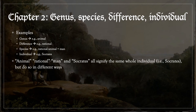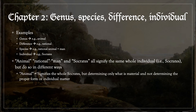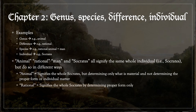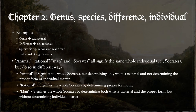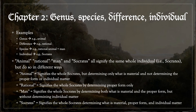Animal, rational, man, and Socrates all signify the same whole individual, namely Socrates, but do so in different ways. Animal signifies the whole Socrates, but does so by determining only what is material and not determining the proper form or individual matter. Rational signifies the whole Socrates by determining proper form only. Man signifies the whole Socrates by determining both what is material and the proper form, but without determining individual matter — that is, that by which Socrates and Plato differ. Finally, Socrates signifies the whole Socrates, determining not only what is material and the proper form, but also the individual matter by which Socrates himself is set apart from other individuals such as Plato and Aristotle, who belong to the same species.